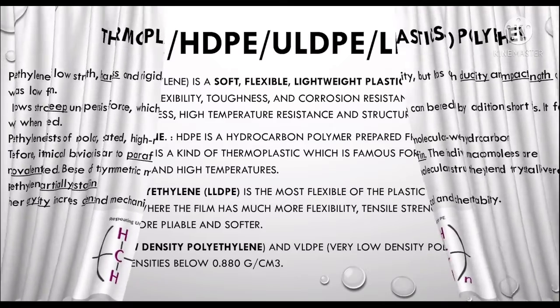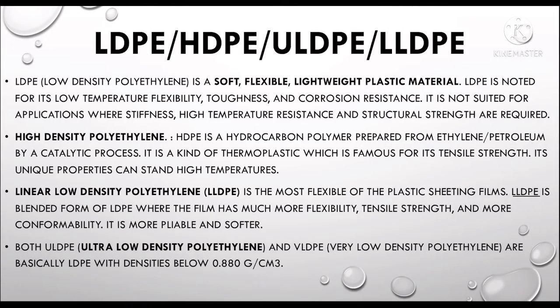The terms we are referring to are: low density polyethylene (LDPE), high density polyethylene (HDPE), ultra low density polyethylene (ULDPE), and linear low density polyethylene (LLDPE). LDPE is a soft, flexible, lightweight plastic material. It is noted for its low-temperature flexibility, toughness, and corrosion resistance. However, it is not suitable for applications where stiffness, high temperature resistance, and structural strength are required. The density of LDPE ranges from 0.910 to 0.925 g/cc.